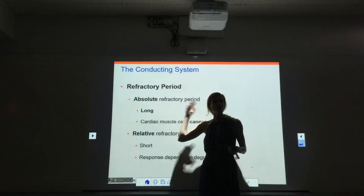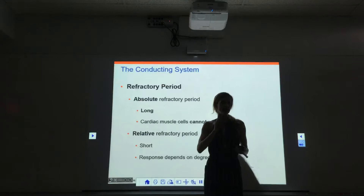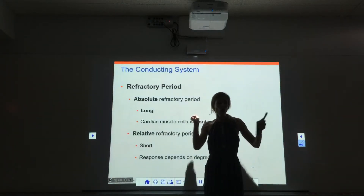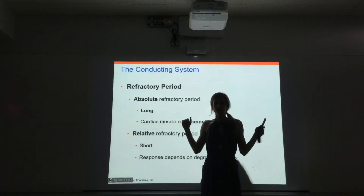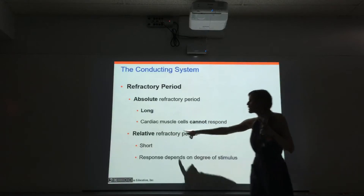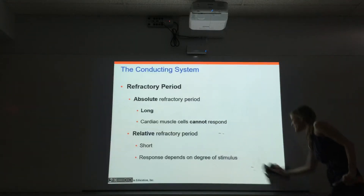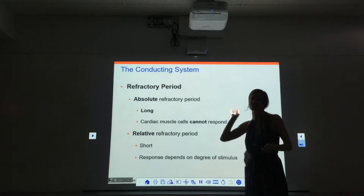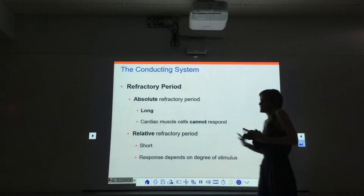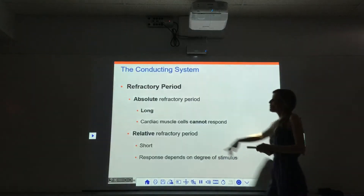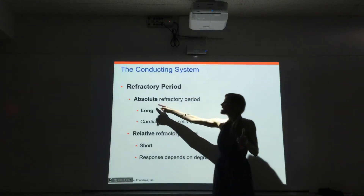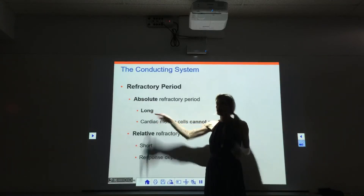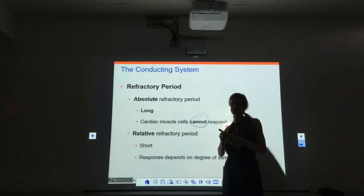A refractory period is when it's harder to stimulate the cell to contract. We have a couple different kinds. An absolute refractory period is when you cannot stimulate that cell — no matter how much stimulus you throw at it, no matter how many times you try, it won't happen. The relative refractory period is when it can be stimulated, but it's really hard — you've got to give it a huge stimulus for it to contract again. Cardiac muscle cells have a really long absolute refractory period when they cannot be stimulated.